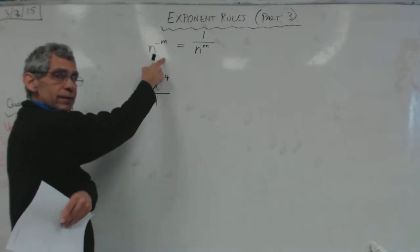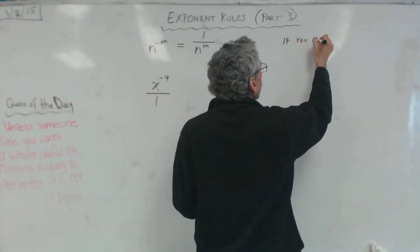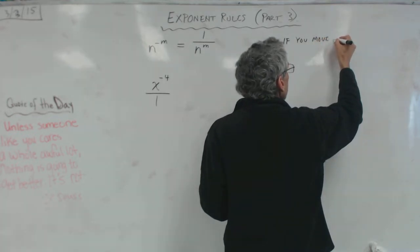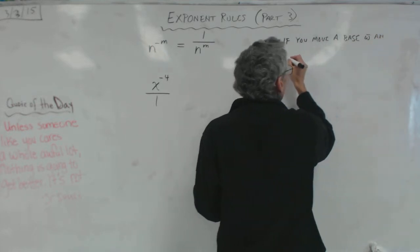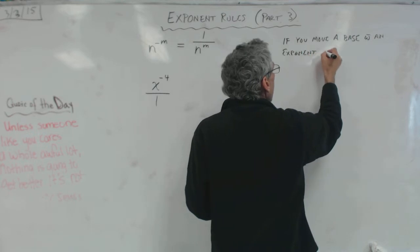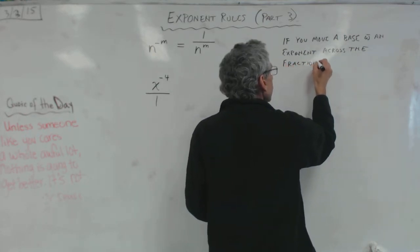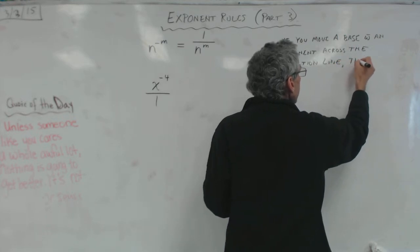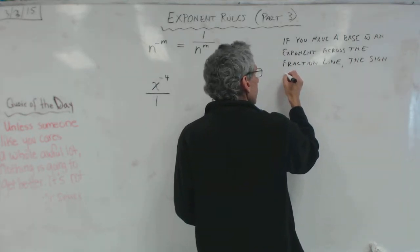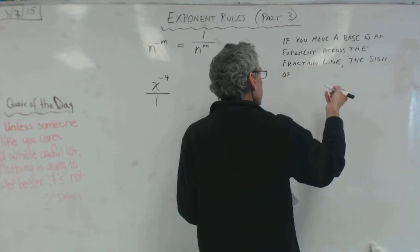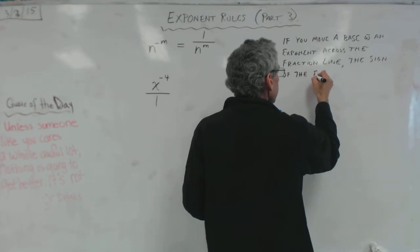Now, what this rule is really saying is this. If you move a base with an exponent across the fraction line, the sign of the exponent is reversed.